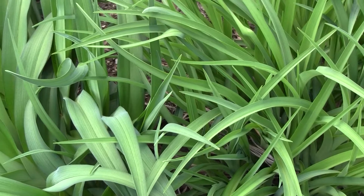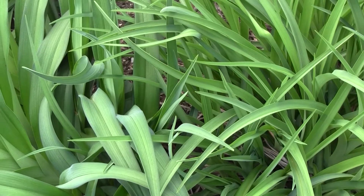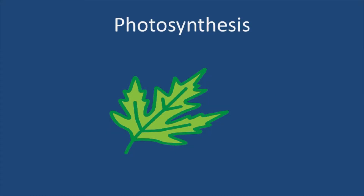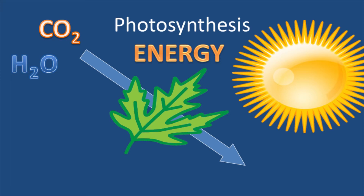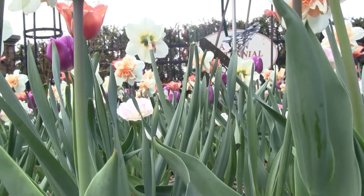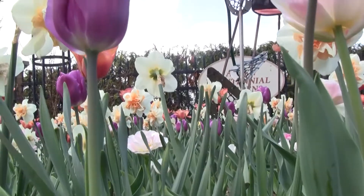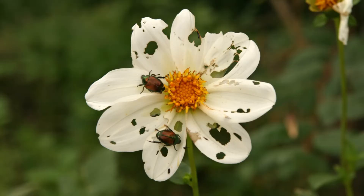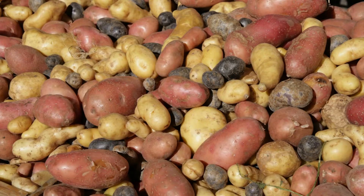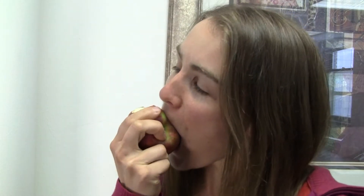Plants absorb and store solar energy through the process of photosynthesis. This is a chemical reaction occurring in the tissues of the plant. Light energy is used to convert carbon dioxide and water into chemical energy — sugars. These sugars are used by the plant to grow, to battle insect pests or drought stress, and to produce flowers and seeds for reproduction. Extra sugars can be put into storage organs for later use by the plant, or for animals to harvest and eat.